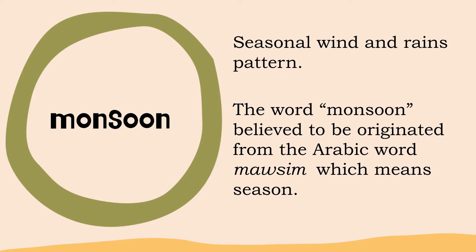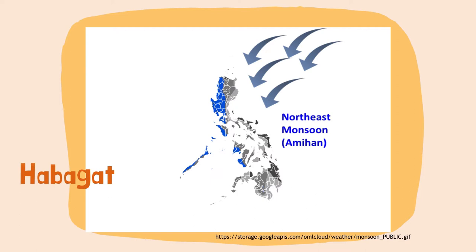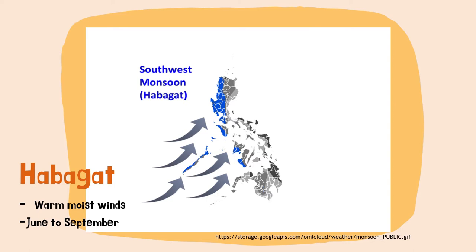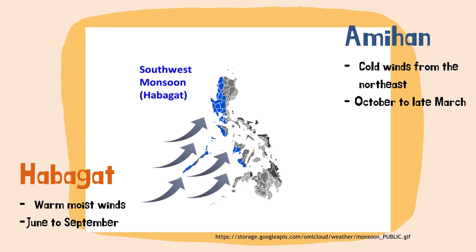There are two known monsoons in the Philippines that occur every year. The southwest monsoon, or habagat, brings warm, moist winds from the southwest, causing rains over the western portions of the country from June to September. The amihan, or northeast monsoon, comprises cold winds from the northeast that bring rains over the eastern side of the country from October to late March.